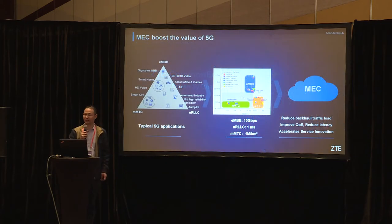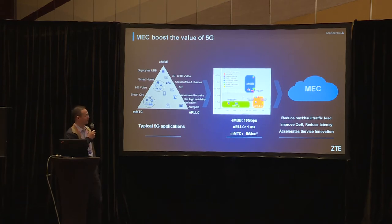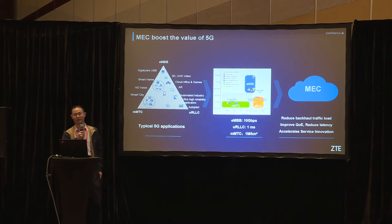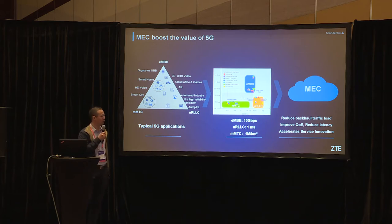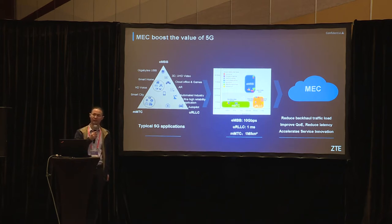As you may already know, in 5G we have three main scenarios: eMBB, URLLC, and mMTC. eMBB will provide 10 gigabit network bandwidth. URLLC will provide a guarantee of one millisecond latency. mMTC will provide one million connections per square kilometer.